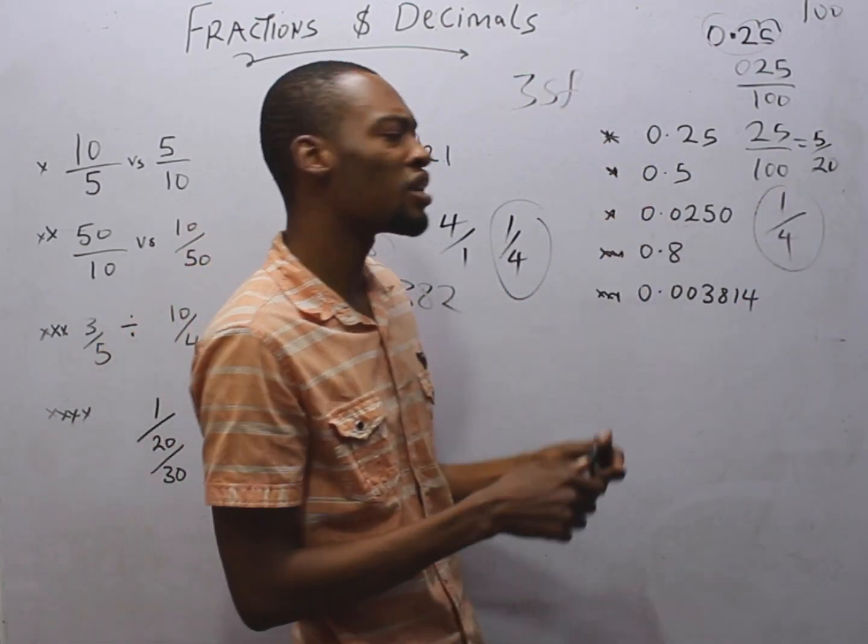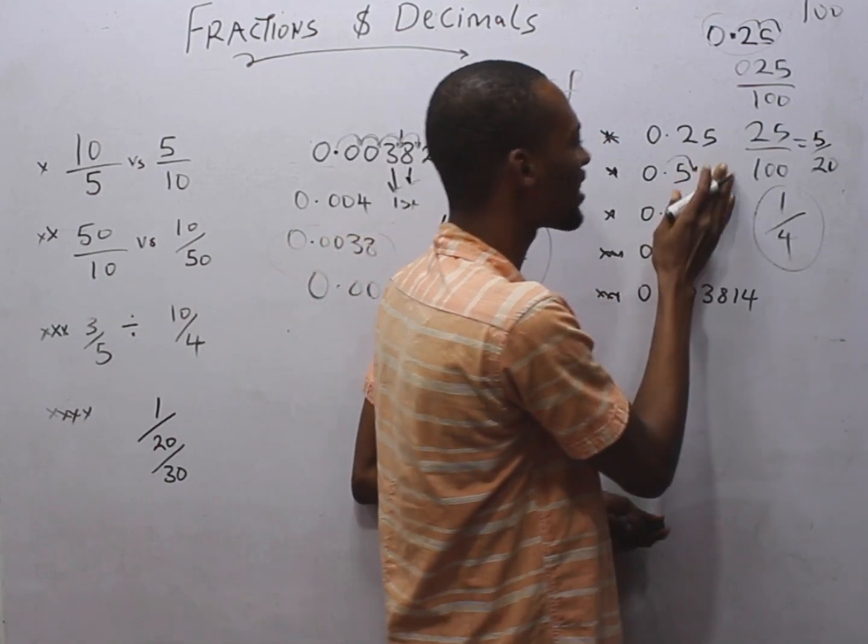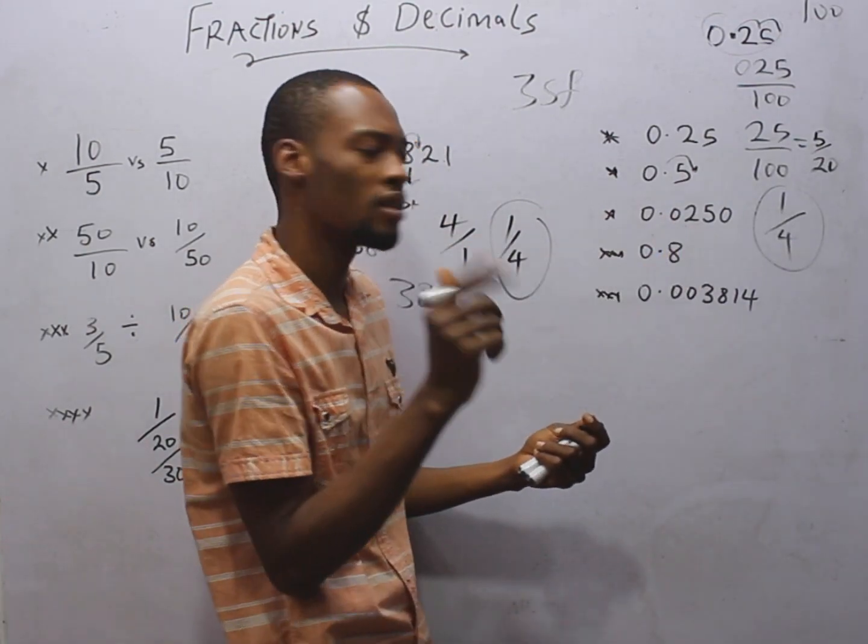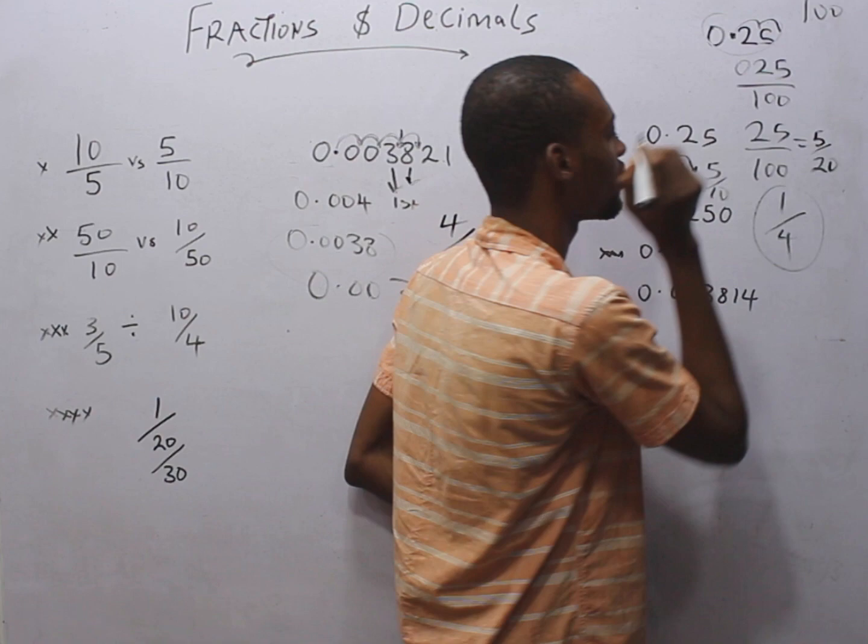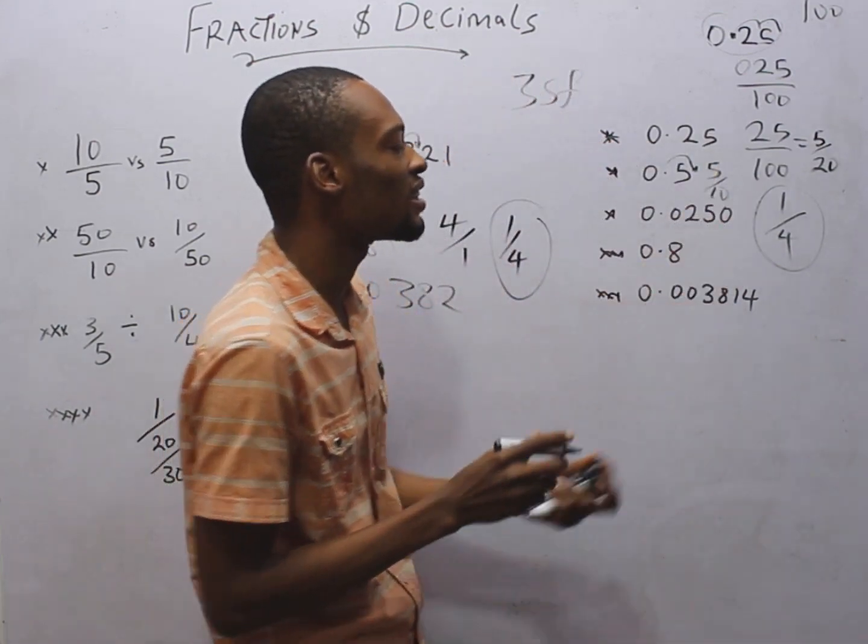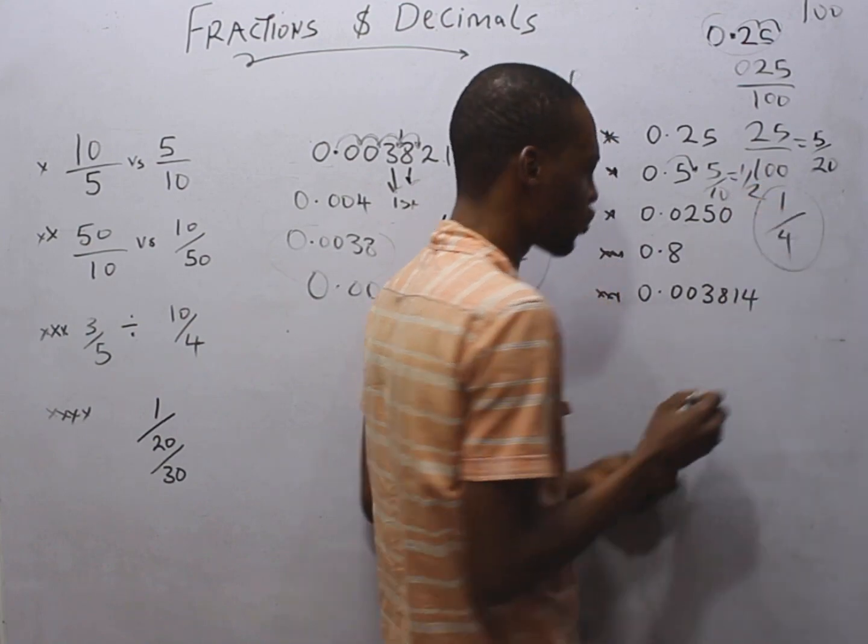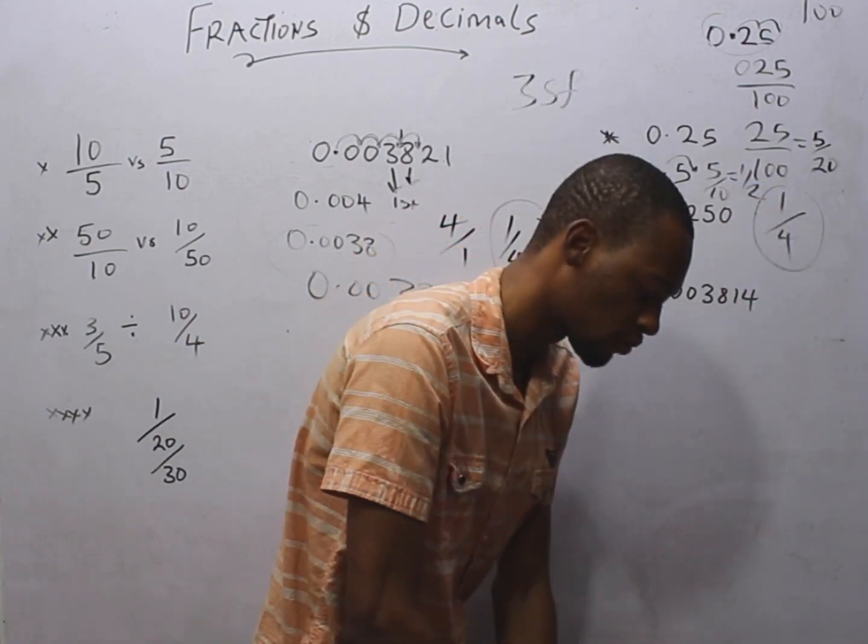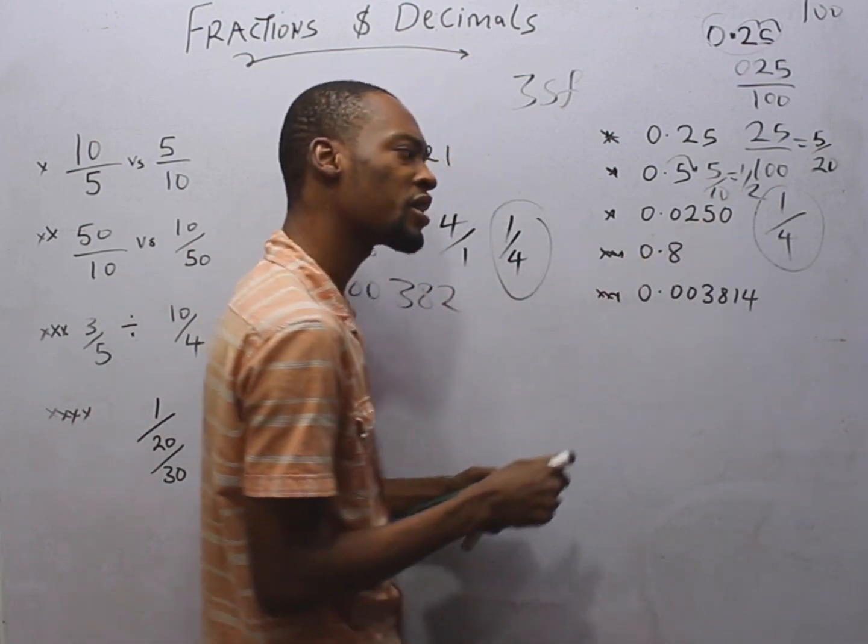Similarly, 0.5 is the same thing as 5 over 10. So 5 over 10 is equal to 1 over 2. You see? Now look at this. How do you convert this to fraction? It is simply, look at this.